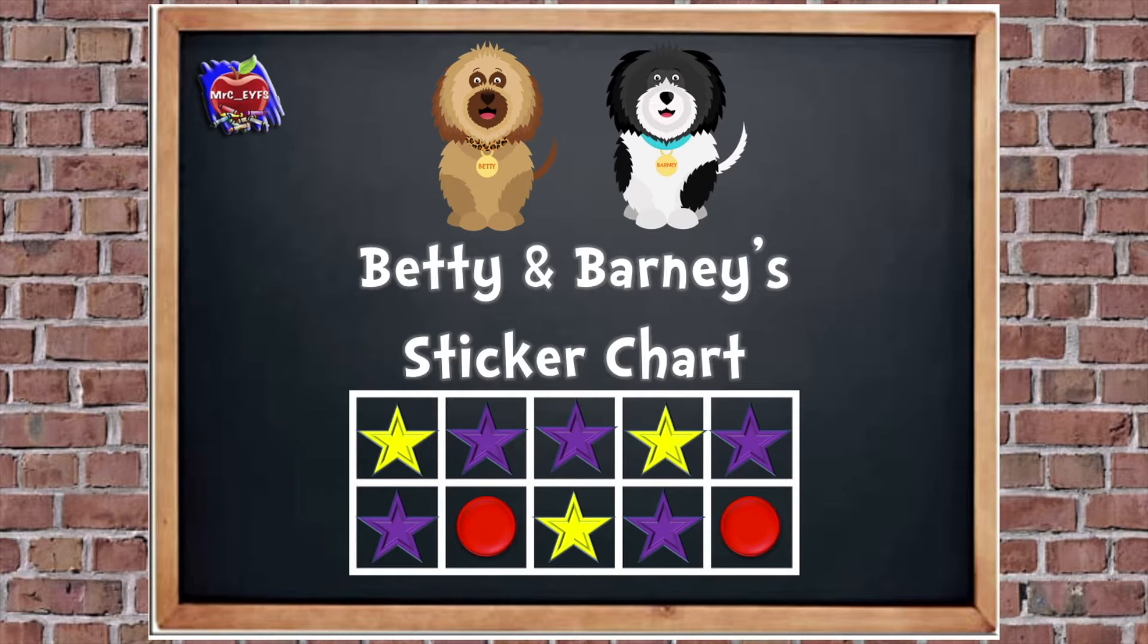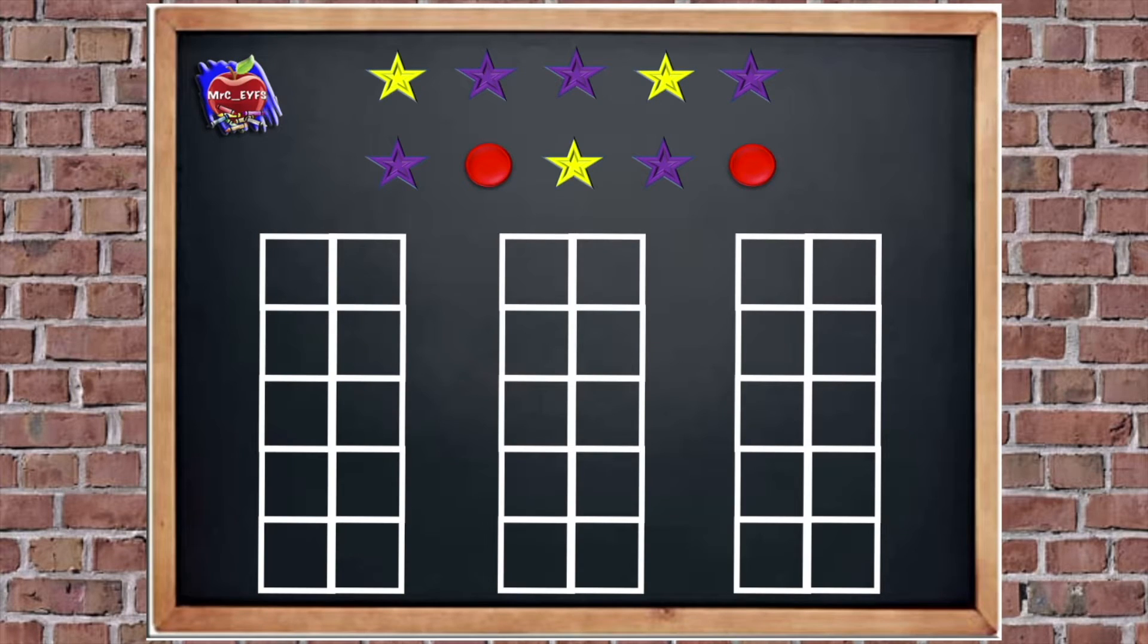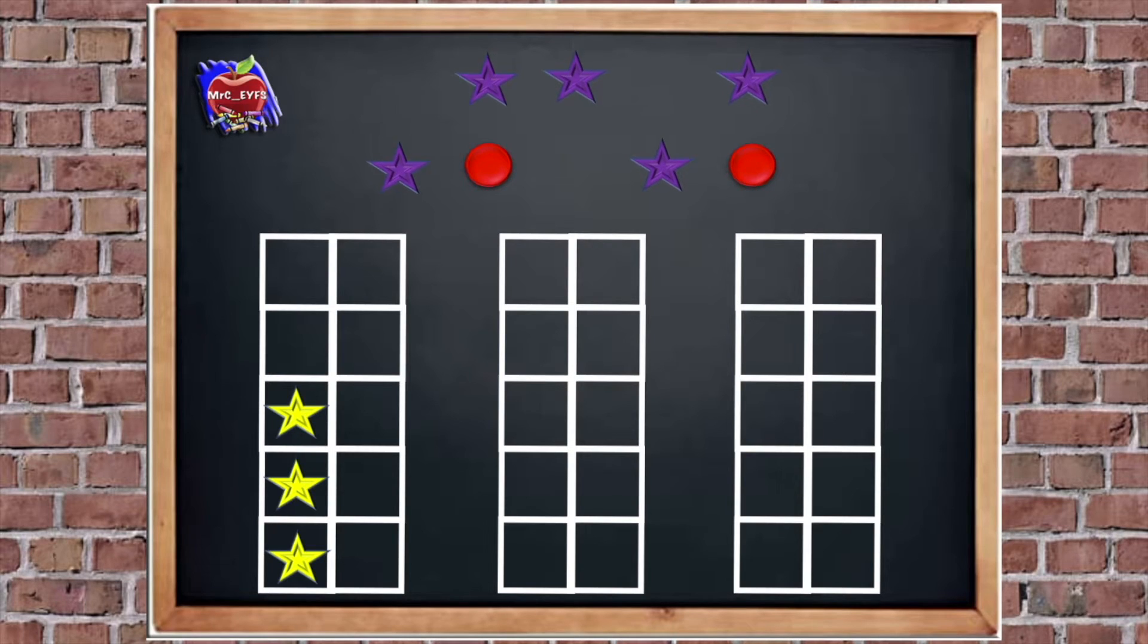So I'm going to use some 10s frames to compare them. So I've got three different 10s frames, because there's three different types of stickers. So I'm going to put the yellow ones in this first one. Then I'm going to put the purple in the middle. And I'm going to put the red in the final 10s frame.